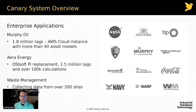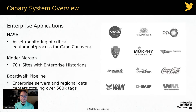For large enterprise applications, oil and gas provides examples of extremely high tag counts. Murphy Oil, for instance, is getting ready to crest the 2 million tag mark — a completely hosted AWS-based system running more than 40 different asset models. Aera Energy out of Bakersfield, California did a complete PI system replacement using Canary with nearly 1.8 million tags, over 100,000 of which are custom calculated tags. Waste Management collects data from more than 200 sites across North America, NASA Cape Canaveral uses Canary for critical asset monitoring, and Kinder Morgan, Boardwalk Pipeline, and Colonial Pipeline all take advantage of Canary as well.